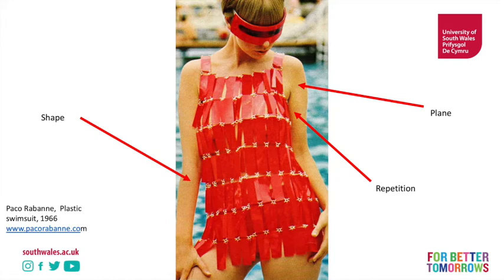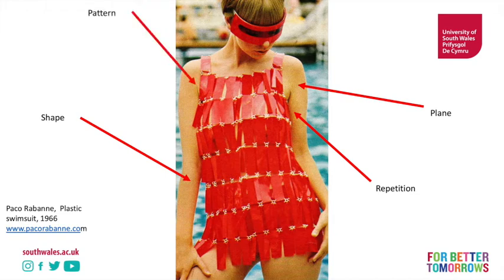Shape and attribute are really important here. So we have plane as our element — our building blocks — repetition as our principle — how we arrange the building blocks — and shape as our attribute, what the building blocks look like. Paco Rabanne has chosen a very geometric, inorganic shape, so the shape itself is in contrast to the figure underneath, and that creates a really exciting tension. It means the shape has a sense of movement as it sits on the body, and the repetition of shape together with the movement of the body creates a visual communication of energy, futurism, and a kind of clash of technology and humanity.